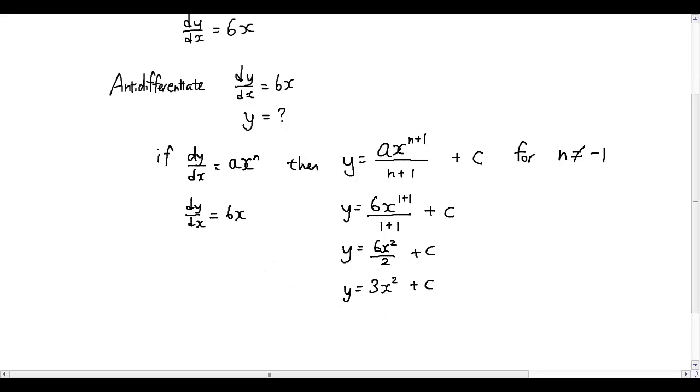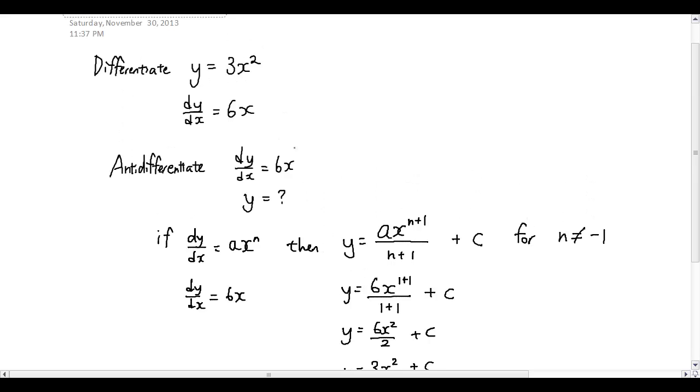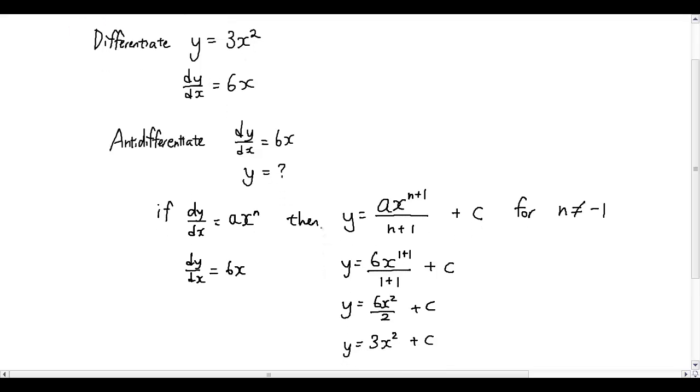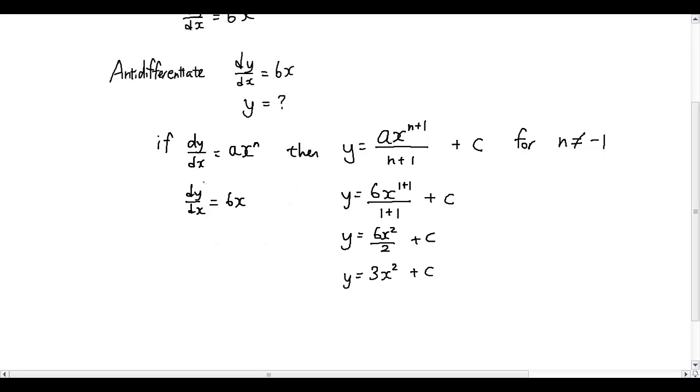Which matches our differentiation equation that we have done earlier: y is equal to 3x squared, dy over dx is equal to 6x. So this process of going from dy over dx to y, we call that solving a differential equation, in other words, anti-differentiate.